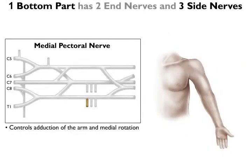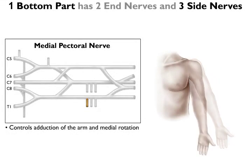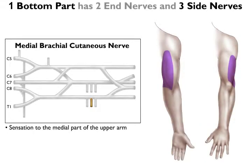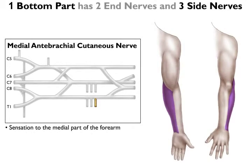Now, let's look at the 3 side nerves. The medial pectoral nerve controls adduction of the arm and medial rotation. The rest of the side nerves are sensory. The medial brachial cutaneous nerve provides sensation to the medial part of the upper arm. The medial antebrachial cutaneous nerve provides sensation to the medial part of the forearm.